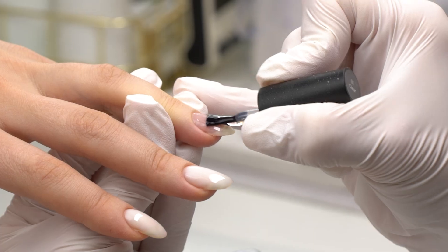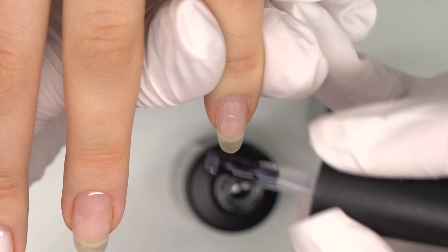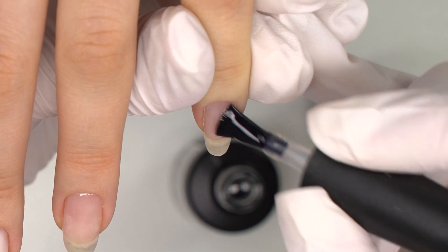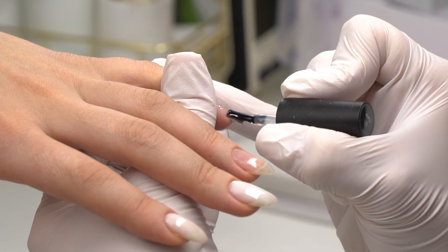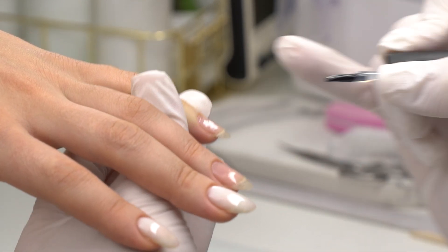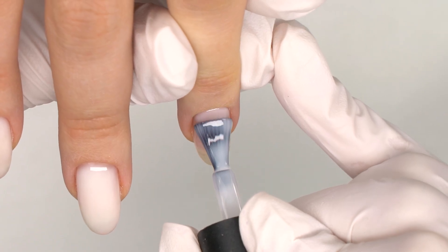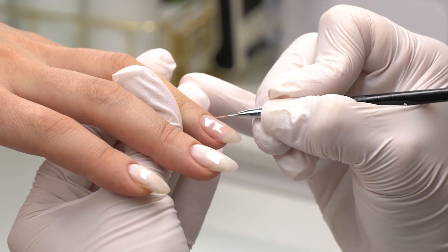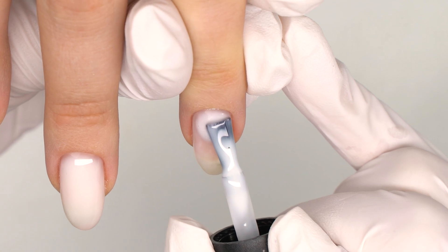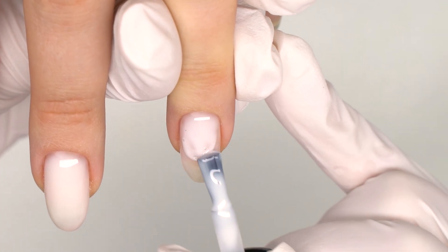You can align it or do a clear layer first and then go with a camouflaging one. The nail plate will get used to it and it will grow healthier under the non-acidic base coat. And then you can easily switch to low acidic materials. Besides, they won't dry out the nails that much.